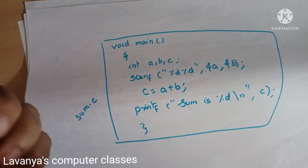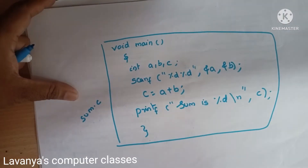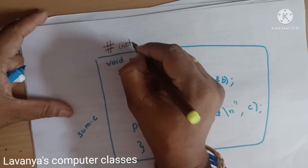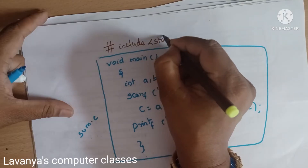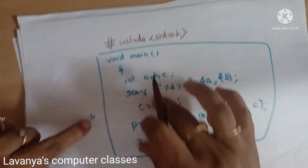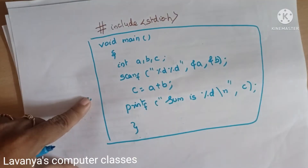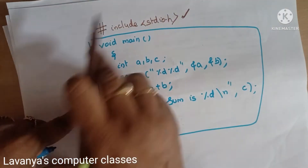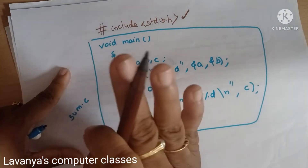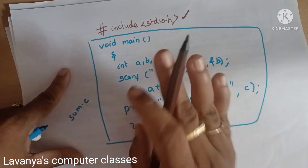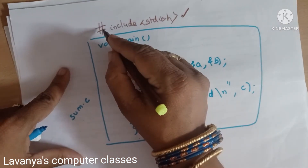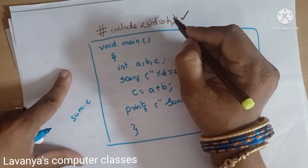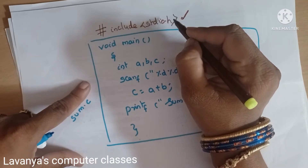Before this program, we write hash-include as the first line. This is our source code. When we compile it to get object code, the line starting with hash is not compiled by the compiler — it is a pre-processor directive. Hash-include stdio.h is the standard input/output header file — a separate file.